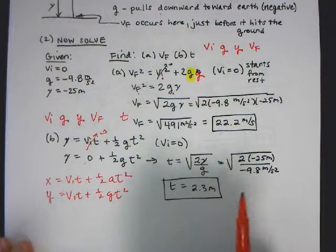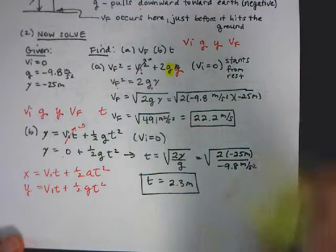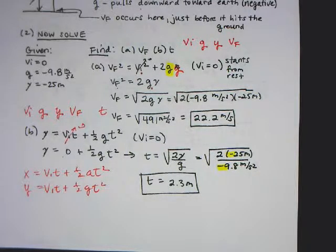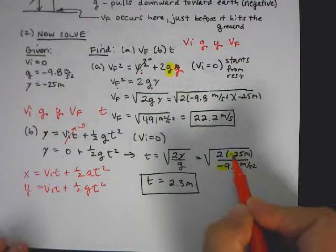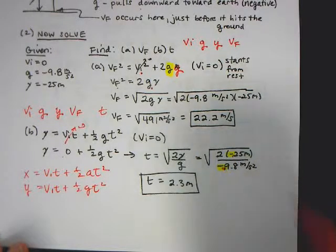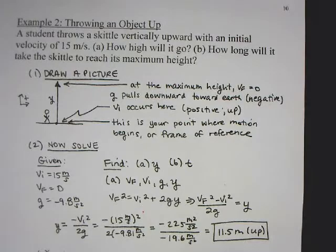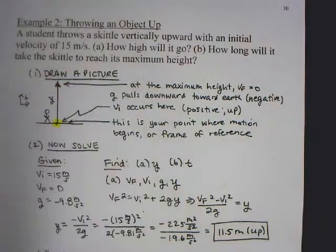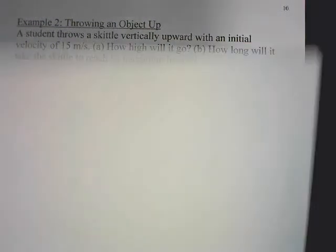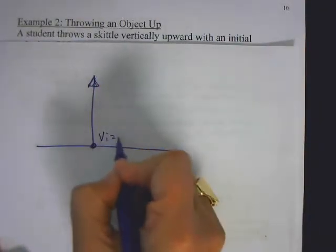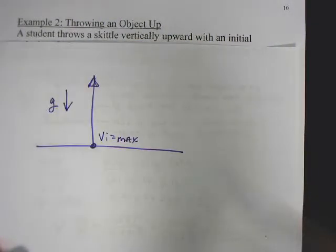For part B — how long does Dr. Solomon have to get out of the way — I want to find t. I have vi, g, y, and I just found vf. Using y equals vi·t plus one half g·t squared, since vi is zero, the whole term goes to zero, so y equals one half g·t squared. I rearrange and solve for t. The key mistake to avoid: you cannot have a negative under a radical. You must be consistent with your sign convention — the building height is negative and gravity is negative, so the negatives cancel, and there's no negative under the radical.